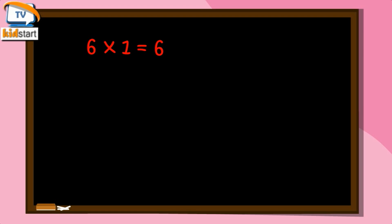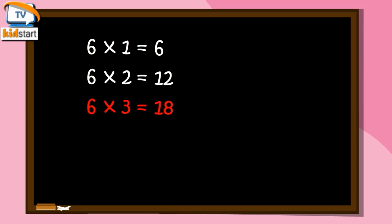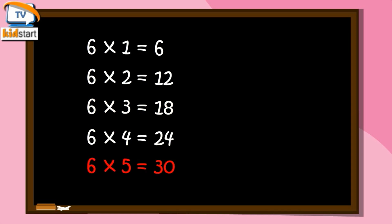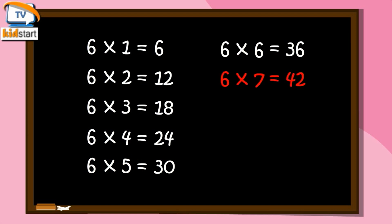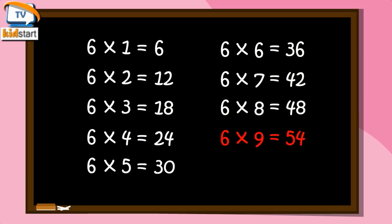6 ones are 6. 6 twos are 12, 6 twos are 12. 6 threes are 18, 6 threes are 18. 6 fours are 24, 6 fours are 24. 6 fives are 30, 6 fives are 30. 6 sixes are 36, 6 sevens are 42. 6 eights are 48. 6 nines are 54. 6 tens are 60.